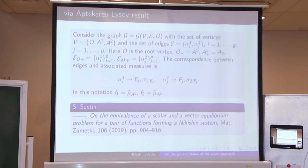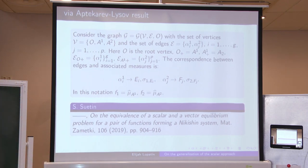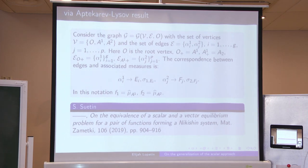Probably these two results together provide a good framework for understanding the real connection between the vector and the scalar equilibrium problem. The main open problem is that in both Aptekarev-Lysov and our considerations, the support of the measure sigma in the construction of the Nikishin system is always situated on the real line. Chirka's kernel is extremely flexible, and we hope that this technique will give us an opportunity to estimate the asymptotics for a truly complex weight.